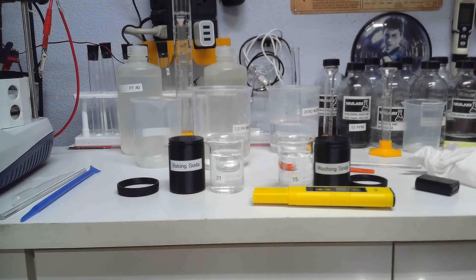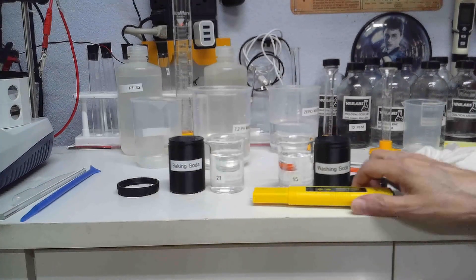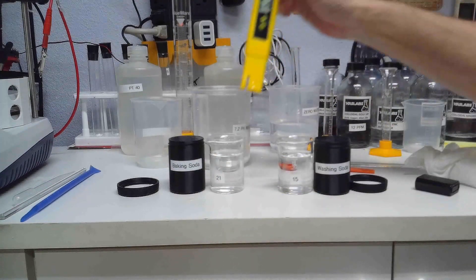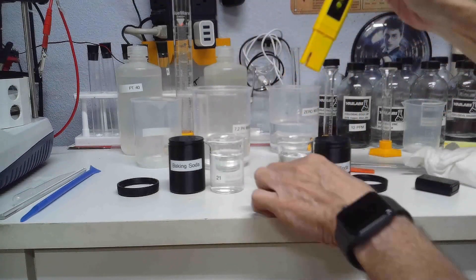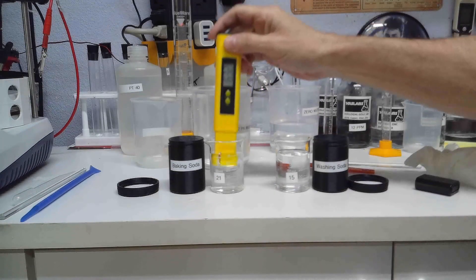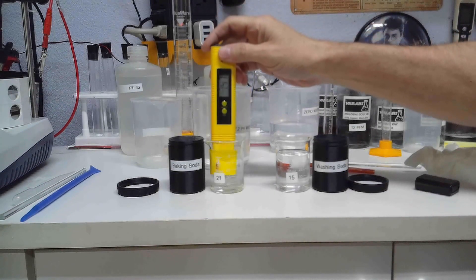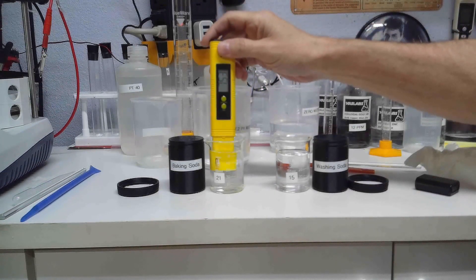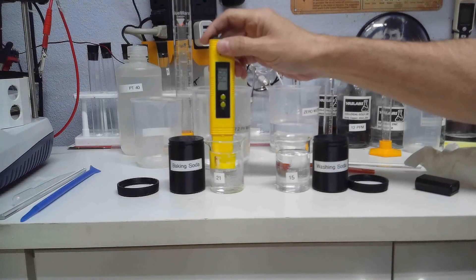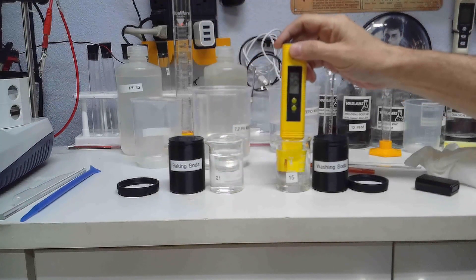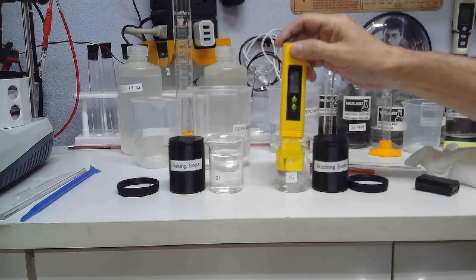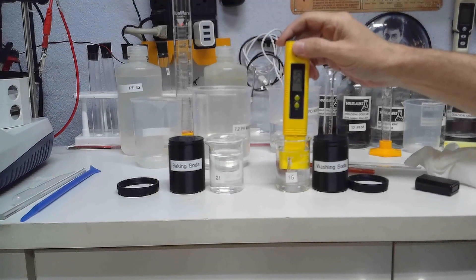So what's the difference between baking soda and washing soda? The difference is the pH. I have two beakers here filled with 50 milliliters of distilled water and as you can see the pH is around 7.5, 7.4 actually. Should be a little lower than that but I'm reusing these beakers.